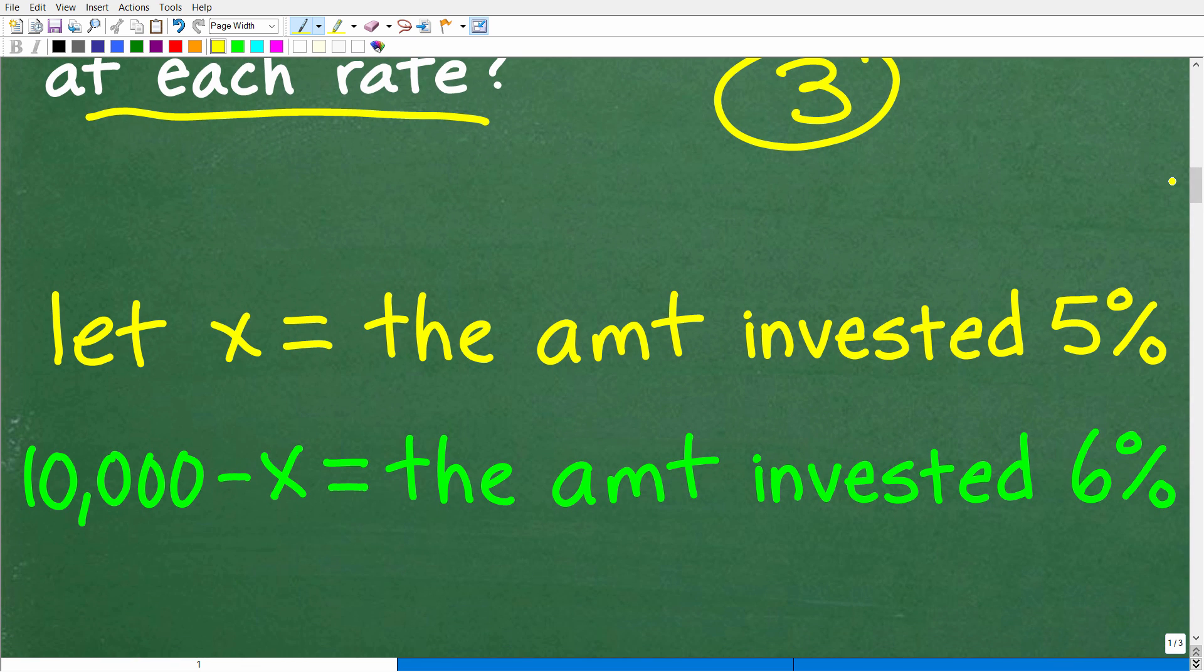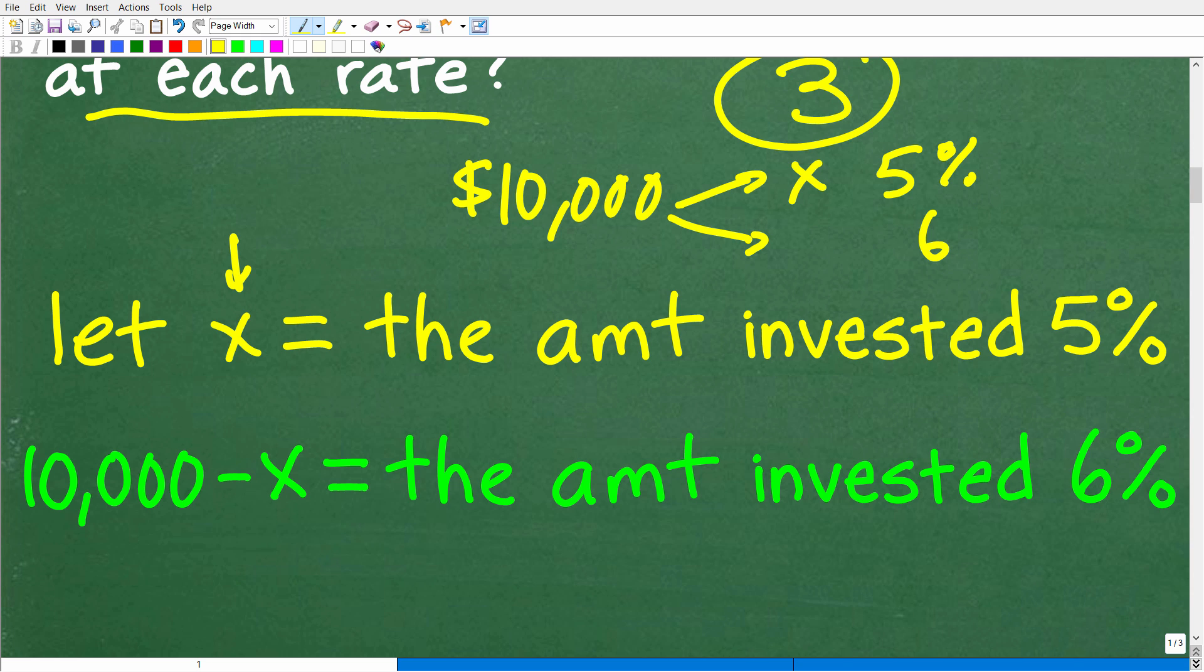All right. So let's go ahead and take a look at how I did that. And you could have done something similar. So I'm going to let X equal the amount he invested, Lou invested at 5%. Now, X could also represent the amount he invested at 6%. It really doesn't make that much of a difference. You'll get the same solution. But I'm going to let X equal the amount he invested at 5%. Now, if he invested X dollars, remember, he has a total of $10,000. If he puts X dollars into the 5% investment, well, how much money is he going to put into the 6% investment? Well, he's going to have to subtract away this amount he put into the 5% from $10,000.